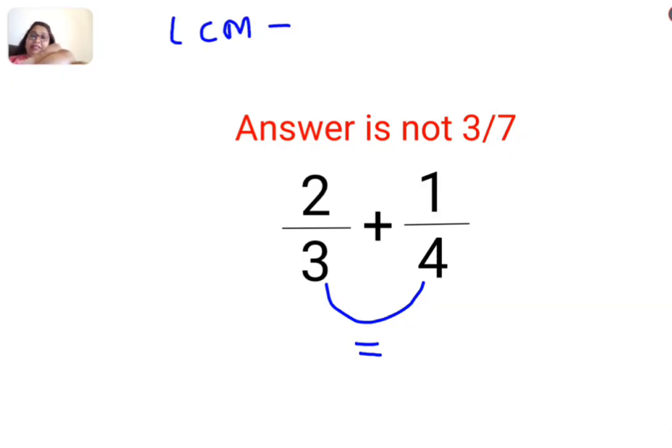Now in this case, how do I do it? You just have to take LCM of the denominators, which is 3 and 4. Now there is nothing common between 3 and 4, so LCM directly comes out to be the product of 3 multiplied by 4.